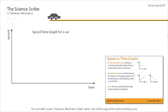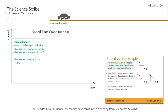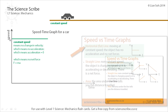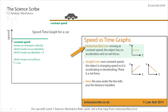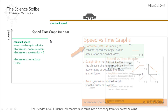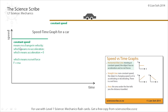Anything on a speed-time graph that's a horizontal flat line refers to something that has constant speed. The reason for that is because if something has constant speed then it means that its speed isn't increasing and it isn't decreasing, and we represent that by using a horizontal flat line.